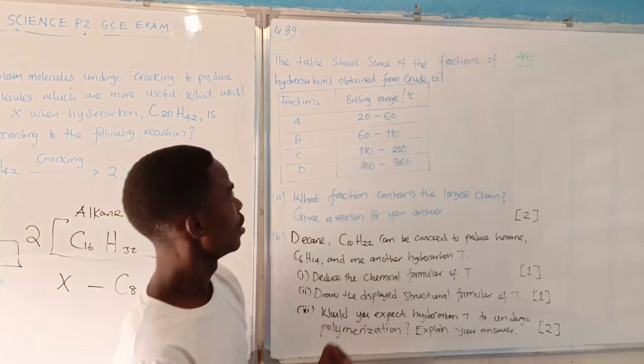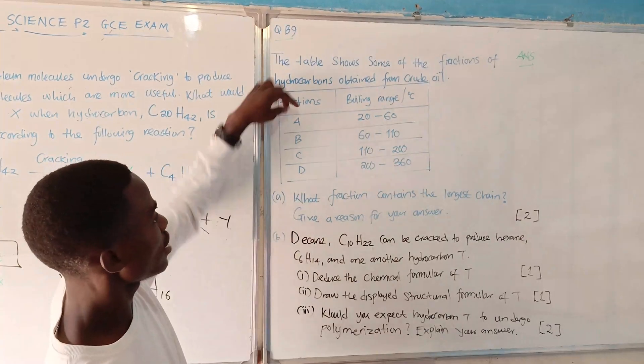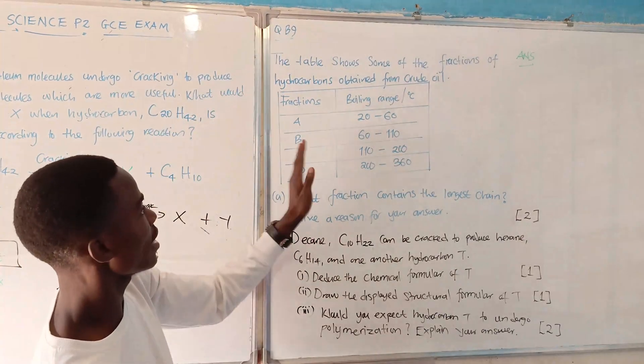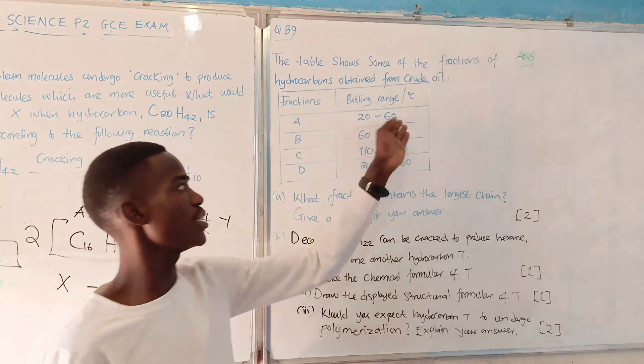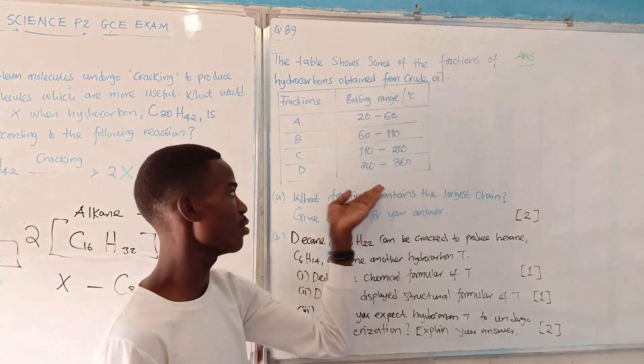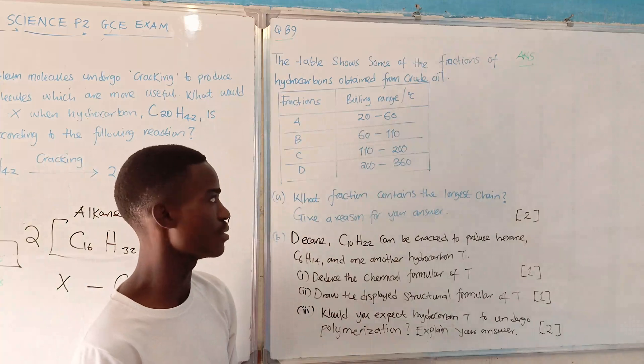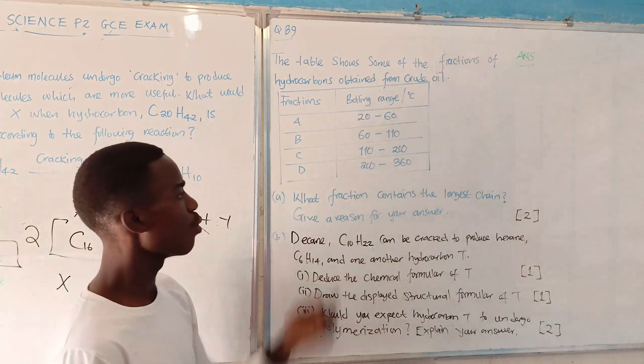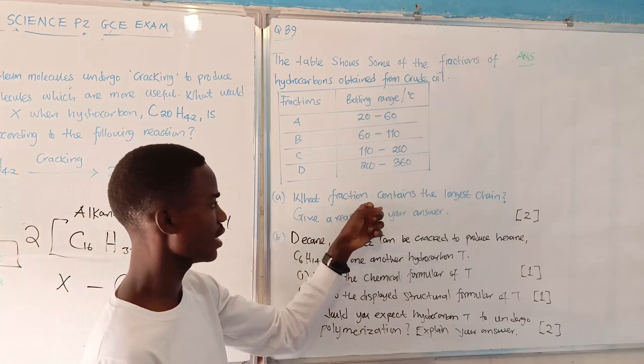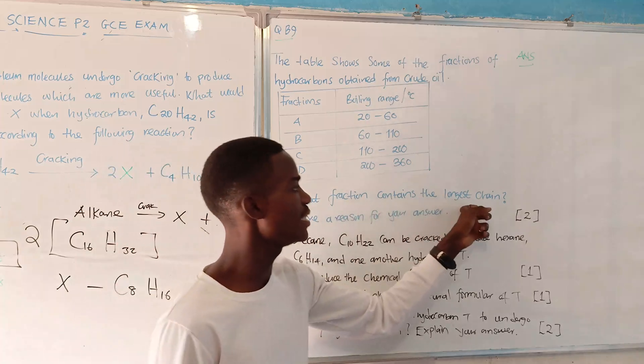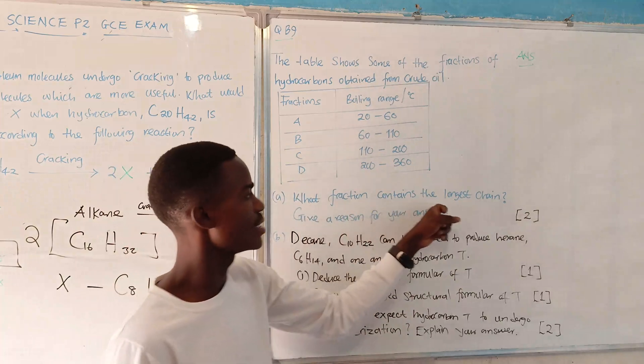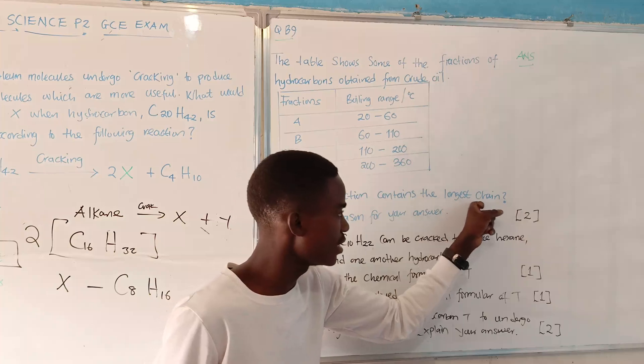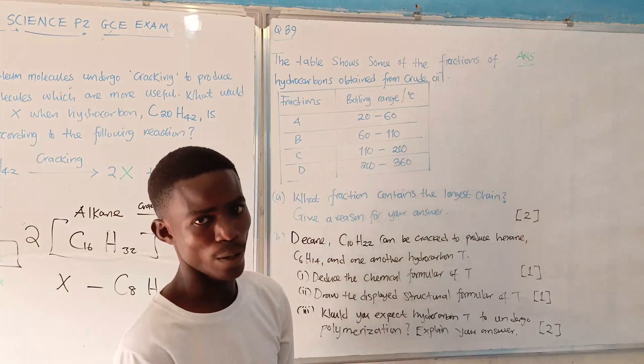The letters A through D are presenting the fractions. On fraction A, we have 20 to 60 degrees, all through up to 360 degrees. The question says, what fraction contains the longest, the largest chain?